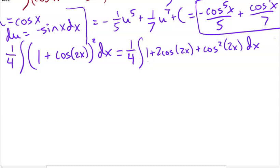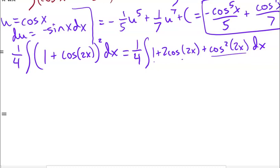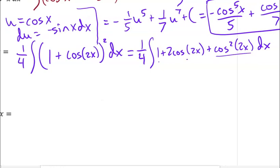The 1 I can integrate, the 2 cosine 2x I can integrate, but this cosine squared of 2x — I still don't have a sine, so I am going to use a half-angle identity one more time on that one. So I'm actually going to split this into a couple of integrals, because I can integrate part of this already.